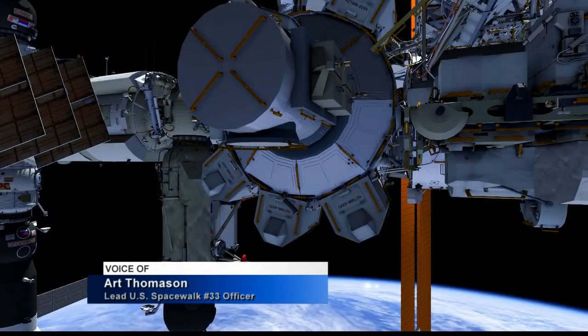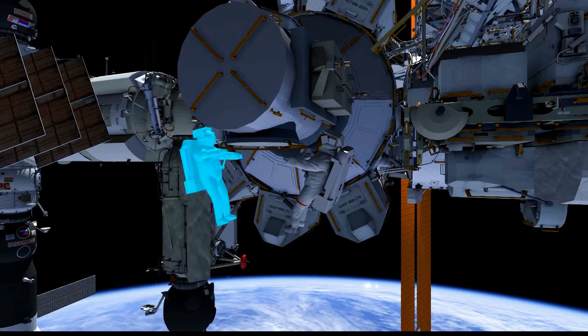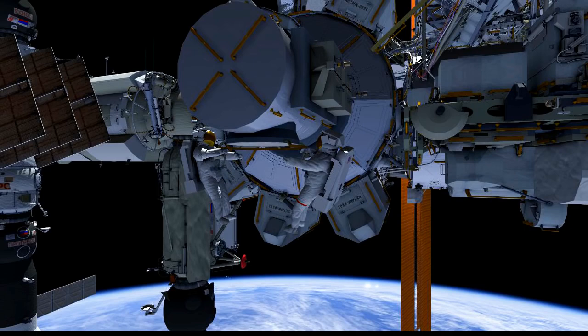For US EVA 33, both crew members will start out at the US joint airlock. We have Chell here in the suit with the red stripes, and Scott will have the suit with the white stripes.